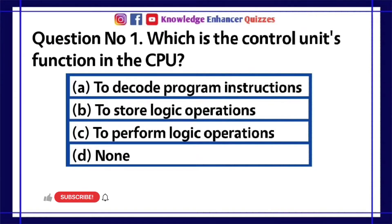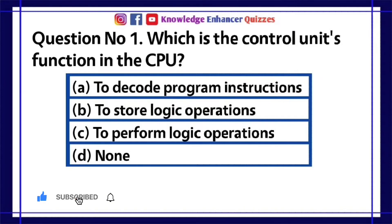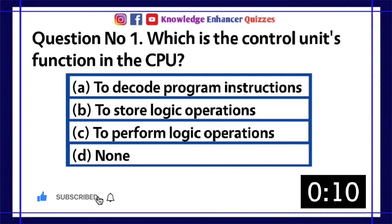Question number 1. Which is the control unit's function in the CPU? A. To decode program instructions. B. To store logic operations. C. To perform logic operations. D. None.